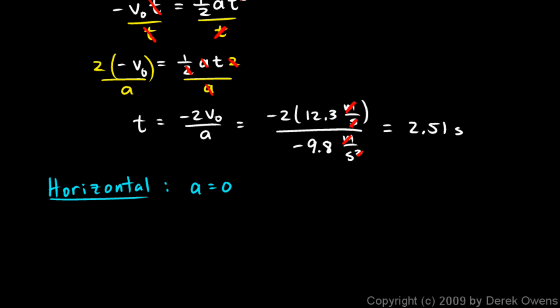Okay, horizontally there's no acceleration. And the initial velocity horizontally we found is 15.8 meters per second. And that initial velocity is the velocity the entire time. It doesn't change because there's no acceleration. And we know the time because we just found that time is 2.51 seconds.